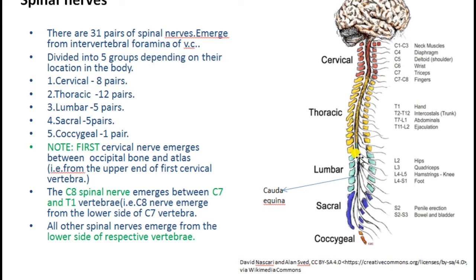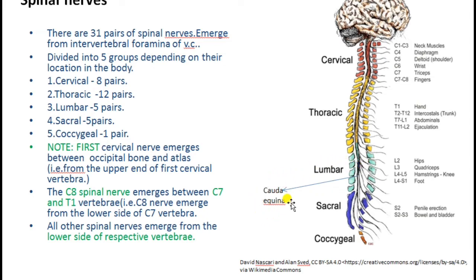The spinal cord in the lumbar region ends at L1 and L2 as a cone-like structure known as the conus medullaris. From the conus medullaris, a non-nervous fibrous tissue continues to the coccyx as the filum terminale. The lumbar, sacral, and coccygeal spinal nerves, before emerging from the intervertebral foramina, fuse to form a structure known as the cauda equina, which runs parallel to the filum terminale.